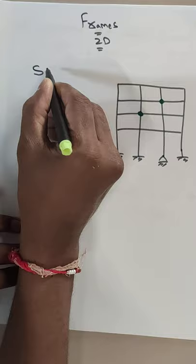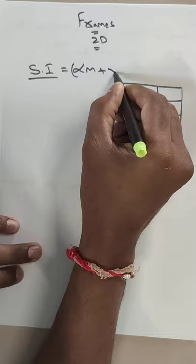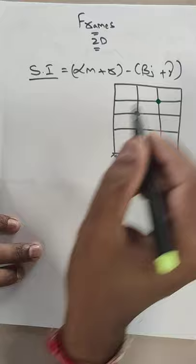To find out static indeterminacy, as I gave you in my previous class, the equation is: Si is equal to alpha times m plus r minus beta times j plus gamma.